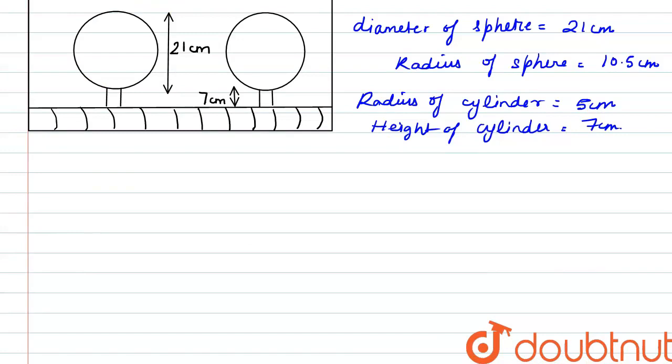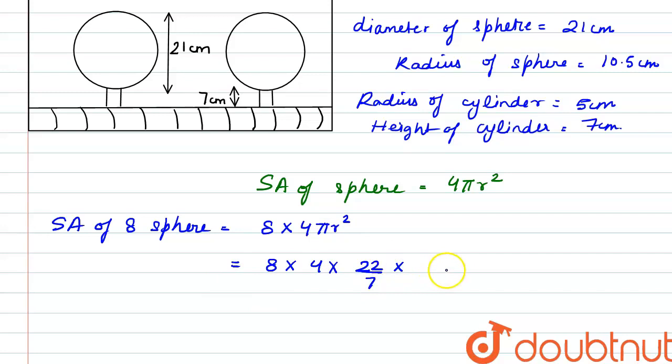So we know that the formula for surface area of a sphere is 4πr². So the surface area of 8 spheres will be equal to 8 multiplied by 4πr². So we have 8 multiplied by 4 into π is 22 by 7 and r is 21 by 2 whole square.